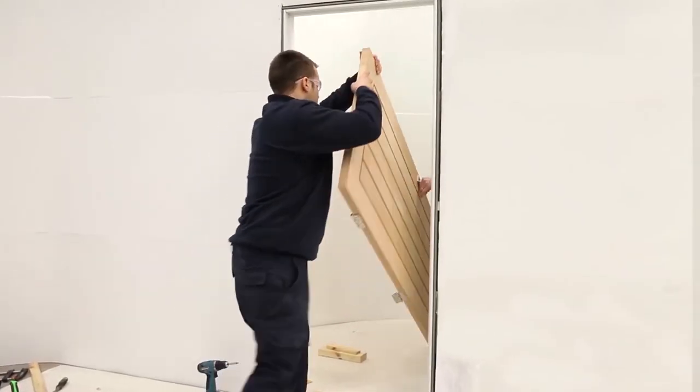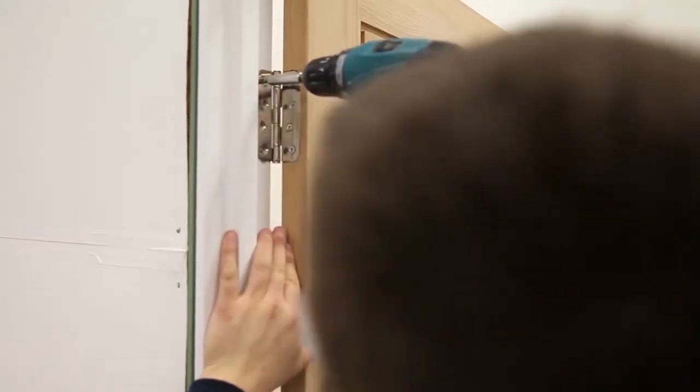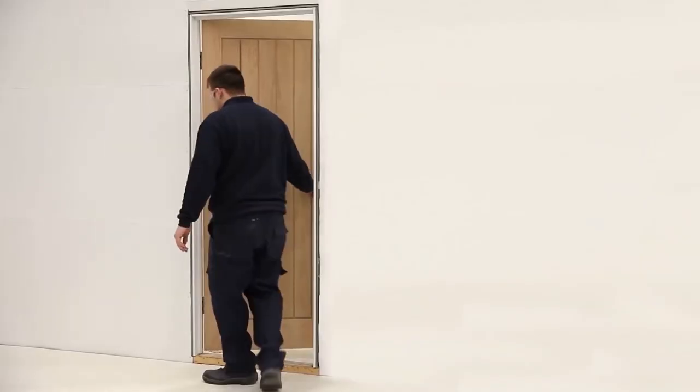So now we've got the latch in place, we've got the handle in place. Bring it back into the frame. Screw the hinges to the frame. Once the door is fully fitted, you must remember to seal all surfaces of the door. Job done. Fantastic.